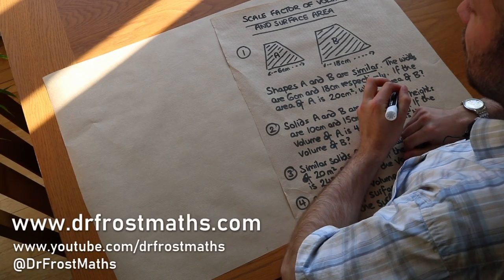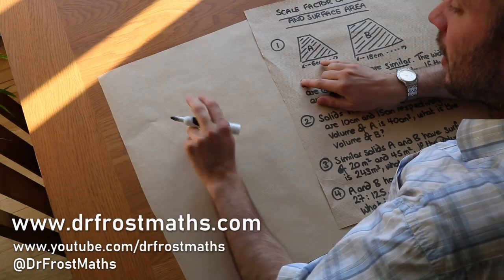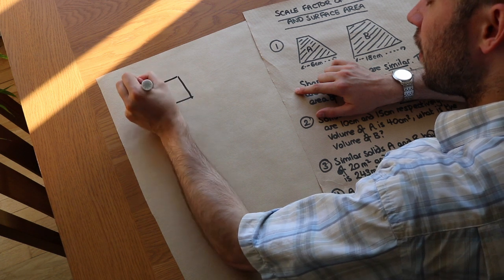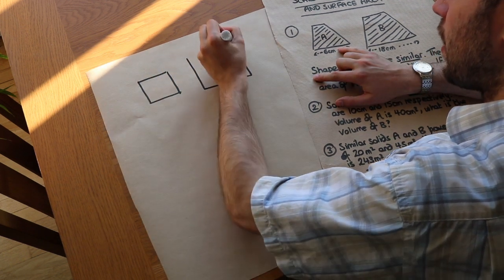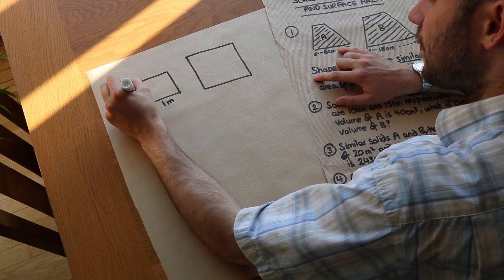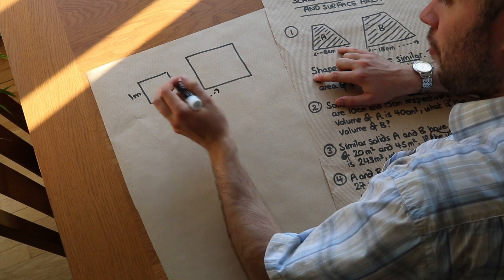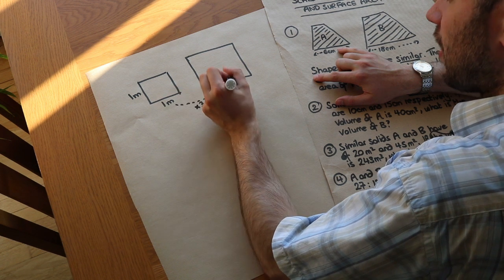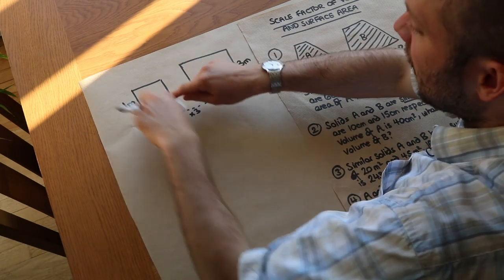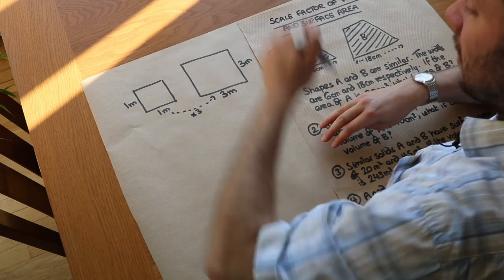Hello and welcome to this Dr. Frost's Maths video on scale factor of volume and surface area. Let's say I draw two squares — this square here is one metre by one metre, and this square we make three times as wide. So that's going to be three metres by three metres because we're scaling the length and the height in the same way — three times as wide, three times as tall.